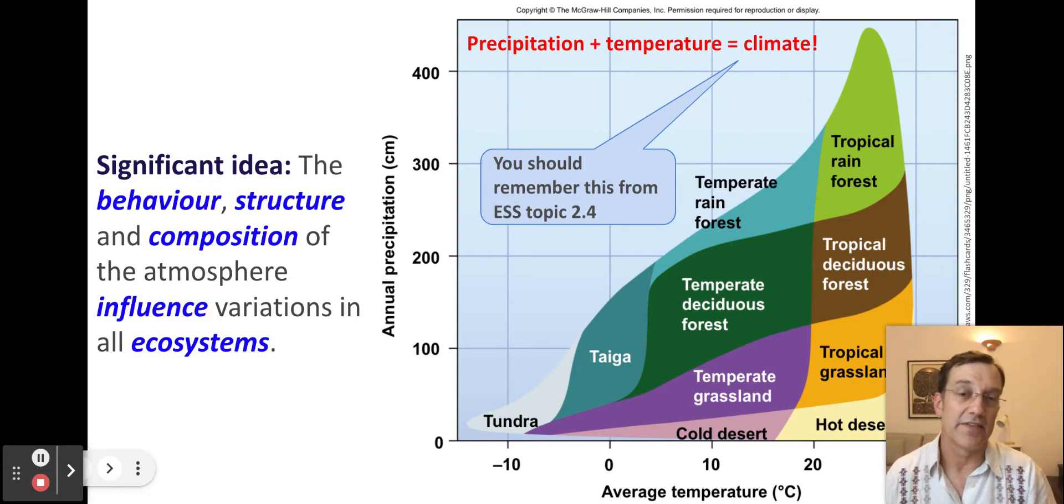The next big idea about the atmosphere is that the atmosphere is really responsible for the development of the terrestrial biomes that we see across the surface of our planet. In this diagram you see on the screen, you should recognize it from our experiences in Topic 2.4. It's called a Whitaker biome diagram and it shows how precipitation and temperature in the atmosphere are the predominant influences on the types of biomes we find here on Earth.